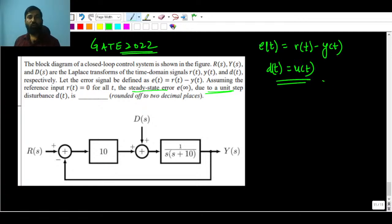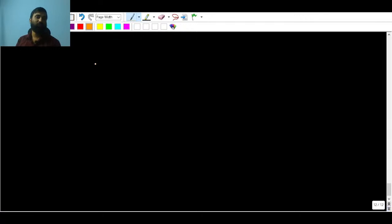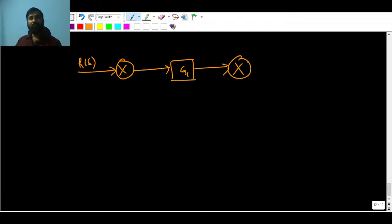There are two gain blocks - you can say this is G1 and this is G2. Let me draw one new block diagram for you. This is going to be your reference, you can say R(s), and this is going to be your G1. And here in between two blocks, there is a disturbance acting on it, that is D(s) plus.